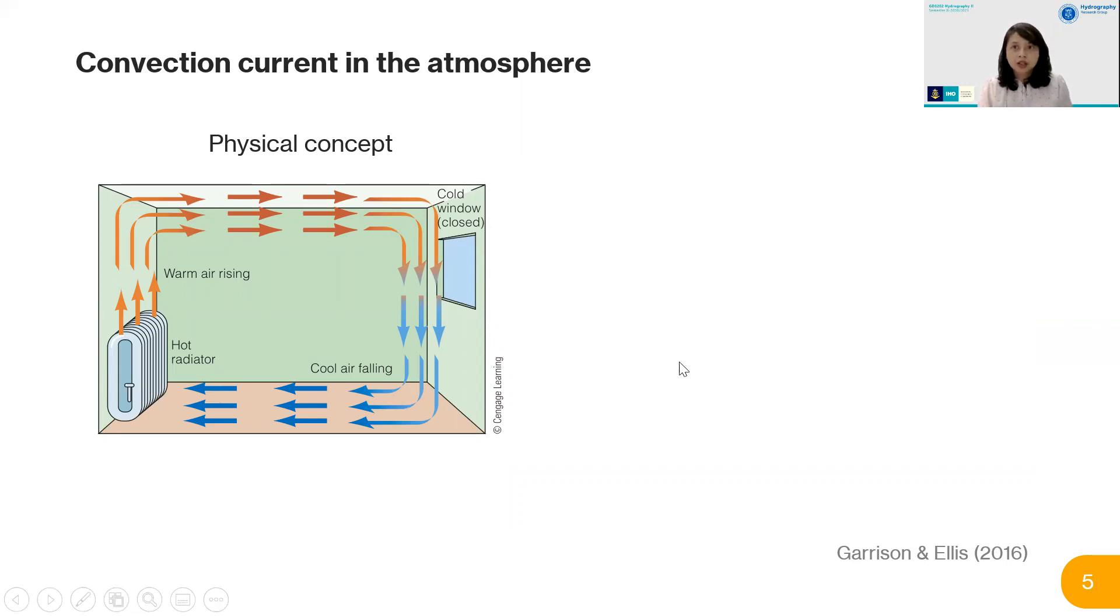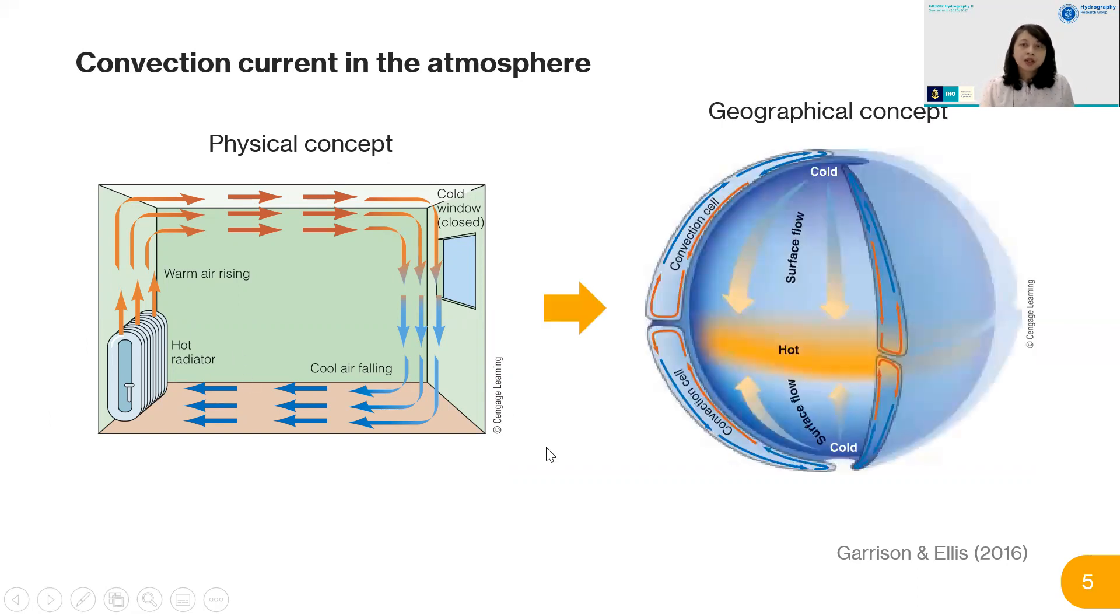That's basically the physical concept of heat circulation on earth. Moving this concept into geographical form, you've got the hottest area at the equator, closest to the sun. Air rises and moves to the coldest places—the North and South Poles—then goes back to the hottest part and rises again. But something is missing from this concept: the Coriolis effect.